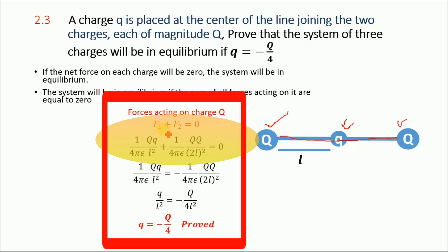The second force F2 acting on this charge Q is equal to 1 over 4π ε₀ times Q times Q divided by (2l) squared. If this length is l then the other side is also l, so the total length is 2l, and (2l)² appears in the denominator. This follows from Coulomb's law: F = k q1 q2 divided by r squared.